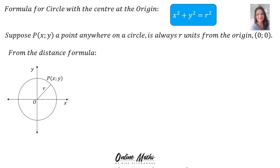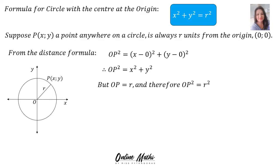Then, from using the distance formula, we can say that OP² = (x − 0)² + (y − 0)², and then that simplifies to x² + y². But we decided that OP = r, and therefore OP² = r². In the place of OP², we substitute r². Therefore, the formula for the circle with the center at the origin is x² + y² = r².